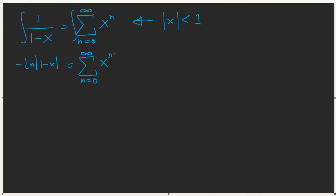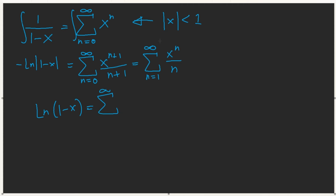This geometric series is for absolute value of x less than 1, between negative 1 and 1. When you integrate both sides of the geometric series, you get the sum from n equals 0, integrated as x to the n plus 1 over n plus 1. Plugging in n equals 0 gives x to the power of 1, so technically this is the same as shifting to n starting from 1. That's where the Taylor series for ln of 1 minus x comes from — the negative comes from the integration of 1 minus x.